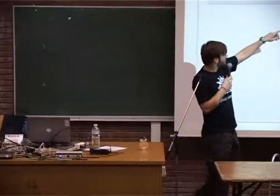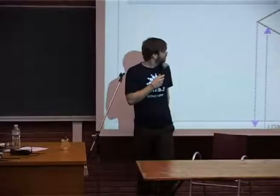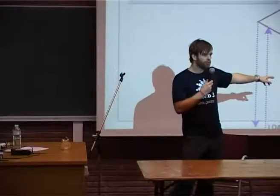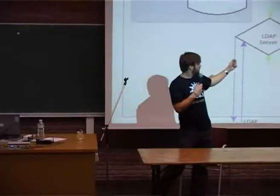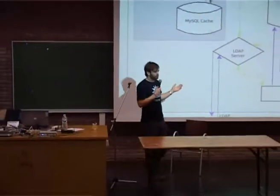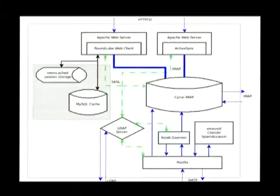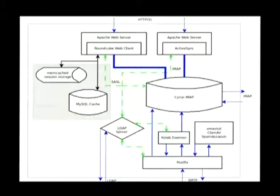Everything is stored in Cyrus IMAP. The user database is stored in an LDAP server. For mail MTA we use Postfix, which works quite well. Spam checking and virus checking use the standard components that all GNU Linux operating systems use. ActiveSync is served by an Apache web server, and the RoundCube web client also runs on Apache, using a MySQL database for caching. Memcache can be used as well.